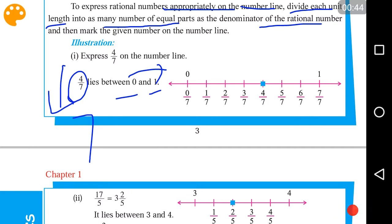So, what we have to do is divide the unit length here, 0 to 1, into 7 equal parts. So here you can see, this is the first equal part and this is second, and like that we have 3rd, 4th, 5th, 6th, 7th. So we have divided 0 to 1 into 7 equal parts.